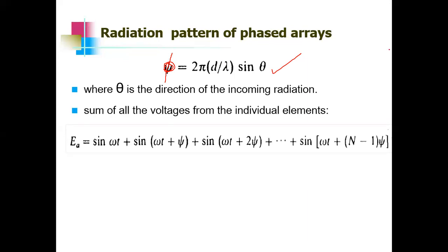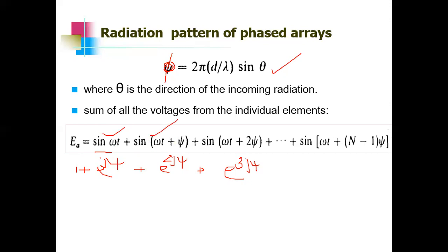The sum of all voltages from individual antenna elements, assuming a phase difference φ between adjacent elements, is written as a series: 1 + e^{jφ} + e^{2jφ} + e^{3jφ} and so on — which can also be written as a sum of sine terms: sin(ωt) + sin(ωt + φ) + sin(ωt + 2φ) etc. This is what was studied in the previous semester.